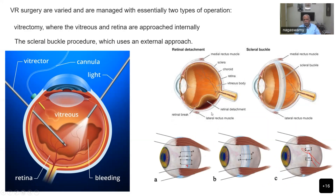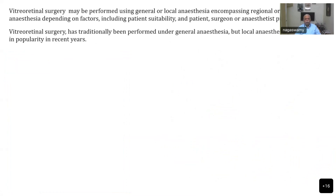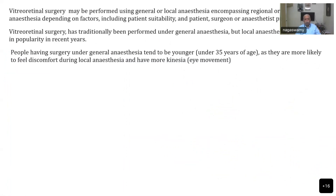They cut a small portion of the sclera and suture it to tighten the globe so that the detachment is stretched out and brought back to normal position. For retinal surgeries, they may be performed using regional techniques or even general anesthesia, depending on various factors including patient suitability and surgeon and anesthetist preference. Traditionally, earlier days it was fully performed under general anesthesia, but nowadays local anesthesia is becoming more popular.